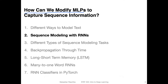Let's now talk about how we can modify multi-layer perceptrons to capture sequence information. In particular, we are going to talk about sequence modeling with recurrent neural networks. But before we get to that, how can we tell whether our model already uses sequence information? For instance, if you think of logistic regression or multi-layer perceptrons, do these types of models actually use sequence information?